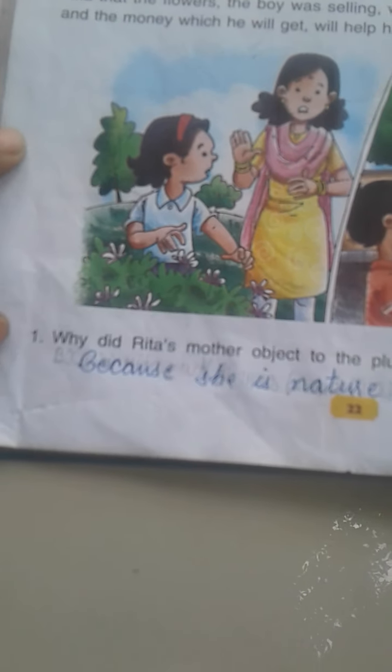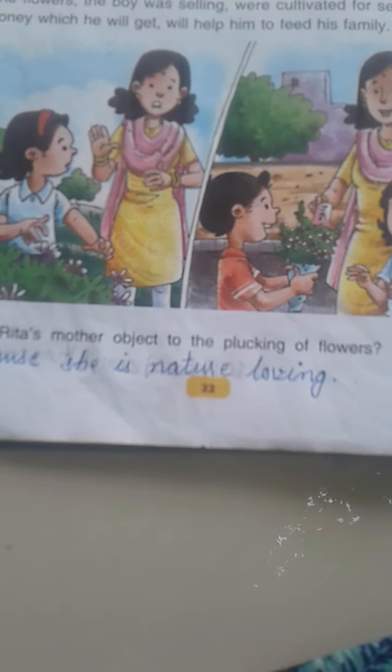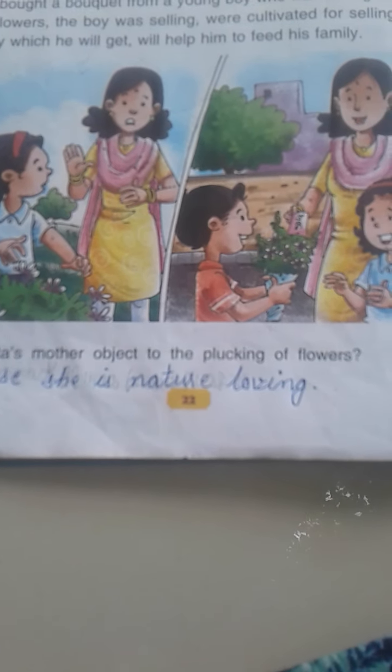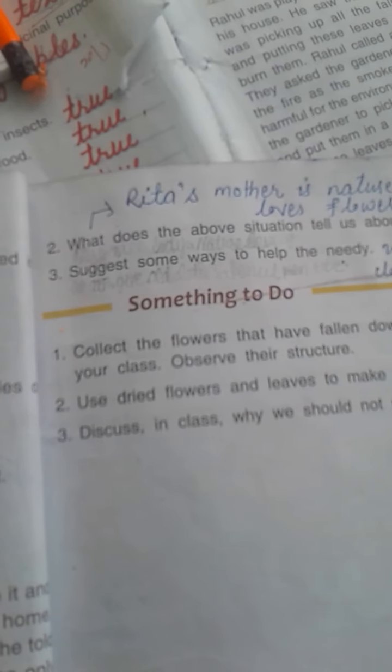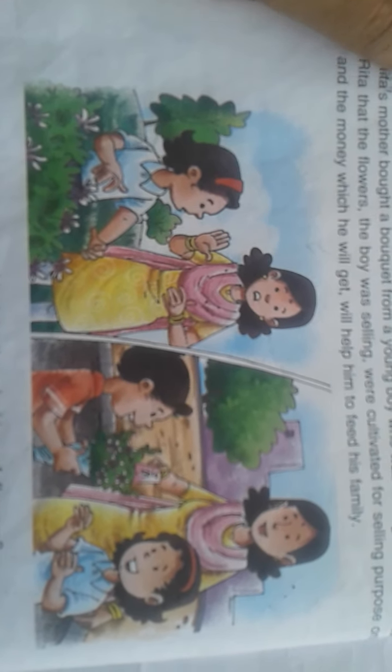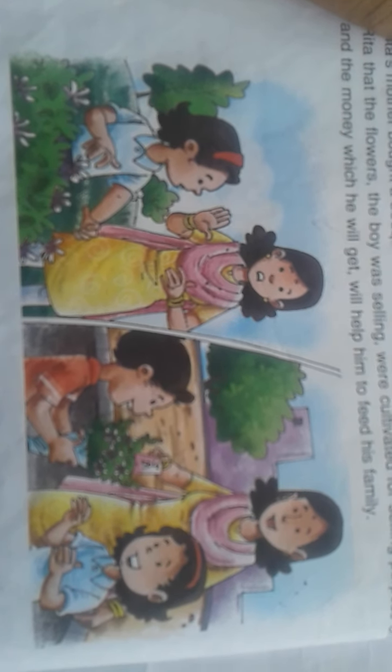So students, here are some value-based questions. Why did Rita's mother object to plucking of flowers? Because she is a nature-loving and caring lady. What does the above situation tell us about Rita's mother? The above situation tells us that she wants to inculcate values in her daughter. She is nature-loving, caring, and a very nice lady, because she also bought a bouquet from a poor boy and gave it to the girl.